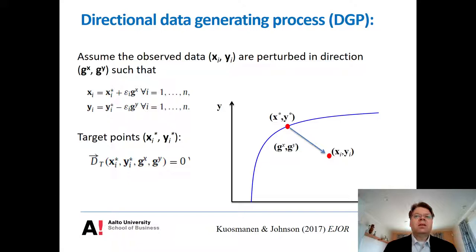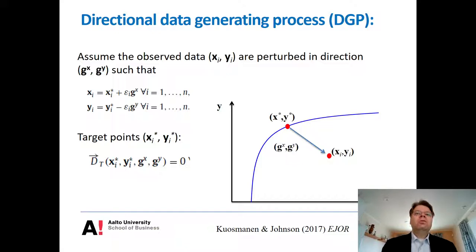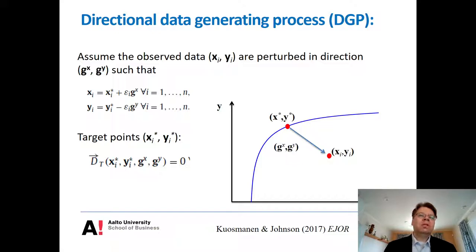Then we have X_i, Y_i — the perturbed version of the frontier point. We introduce direction vectors G_X and G_Y to make this perturbation, multiplying the direction vector by epsilon. This way we introduce inefficiency and noise to each input and output variable. Epsilon could be symmetric noise or could include some inefficiency. The target points X*, Y* have the value of the distance function equal to zero by construction.